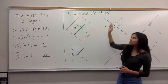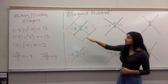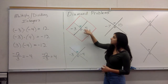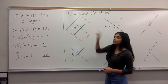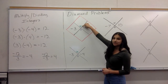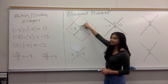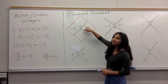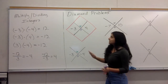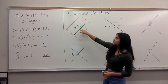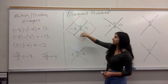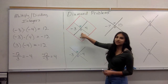We're going to be doing something called diamond problems. In this diamond problem, you see we have two numbers — a negative three and a four. Right here we have a little x, which means multiplication, and right here we have a plus sign, which means addition. So we're going to multiply these two numbers and write the answer up here, and then add them and write that answer right here.